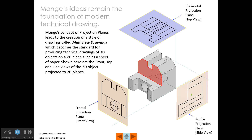Monge's ideas really became the foundation of modern technical drawing. Here we see that same part from the preceding slide, but this time we've added a horizontal projection plane to the top and we project up to it from our 3D part, getting a two-dimensional top view. We place another projection view to the side of this object — standing on this side, looking in the direction of the object — and we project the features onto the projection plane, giving us what's called a profile projection plane, which gives us a side view. So we have a front, a top, and a side view.